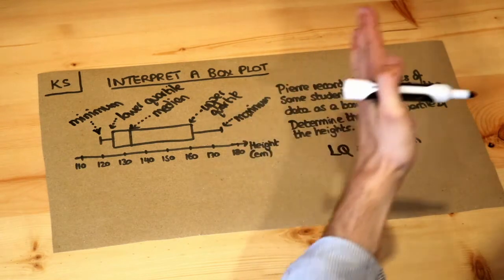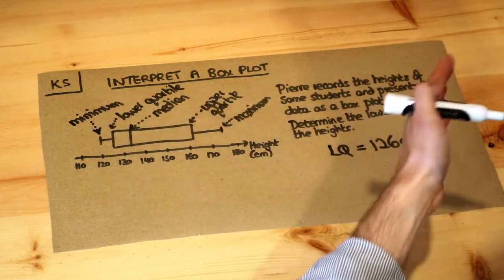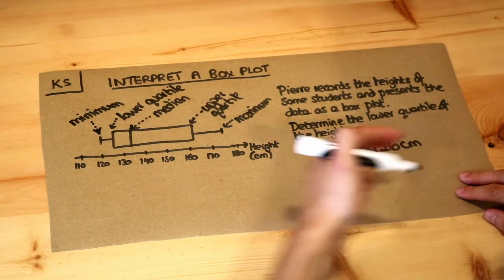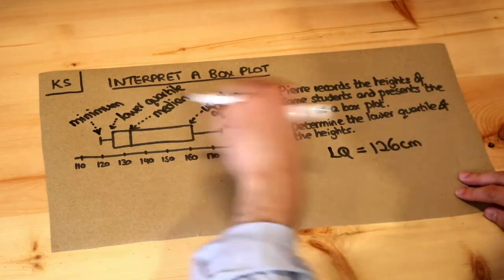And that basically tells you that the heights of students are more spread out above the average, more spread out above the median than they are below the median. And the box plot is really good at visually allowing you to instantly see facts like that.